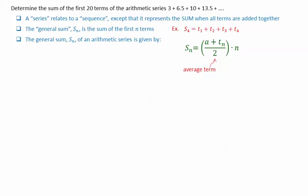In this case, a plus Tn divided by 2 corresponds to the average term, and we multiply this by the number of terms.